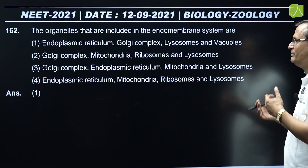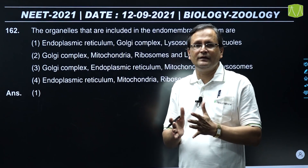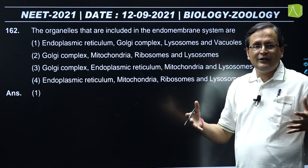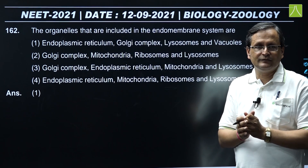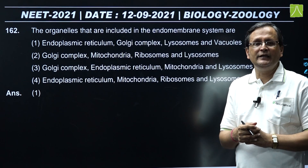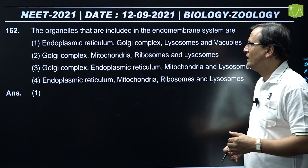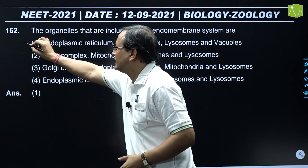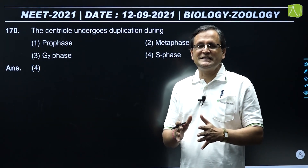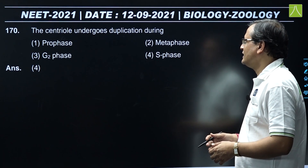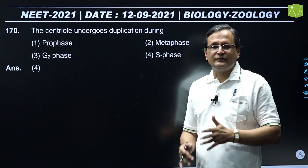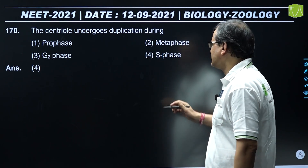Question 162: Which organelles are included in the endomembrane system? The endomembrane system consists of cell organelles that work in a coordinated manner to perform particular functions. It includes endoplasmic reticulum, Golgi body, lysosome, and vacuole. This is given in the first option, so the correct answer is option one. Question 170: When does the centriole undergo duplication? It occurs during S phase. So the correct answer is option 4.